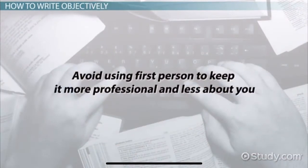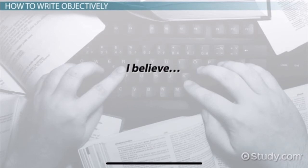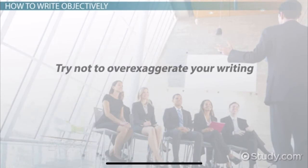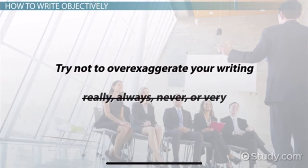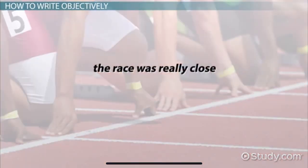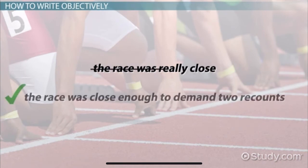Avoid using first person to keep it more professional and less about you. Rather than writing 'I believe,' try using a fact or credible source to prove your point, like 'according to Smith, 1999.' Try not to over-exaggerate your writing. It can help to never use words such as really, always, never, or very. These words can make your writing appear falsified or weak. Rather than writing 'the race was really close,' be more informational by writing 'the race was close enough to demand two recounts.'